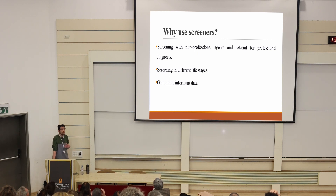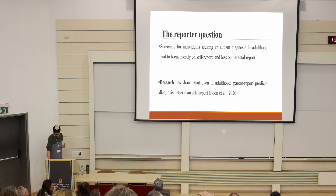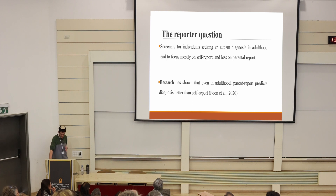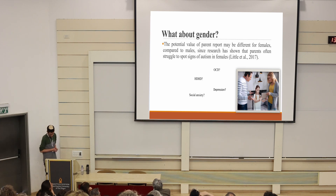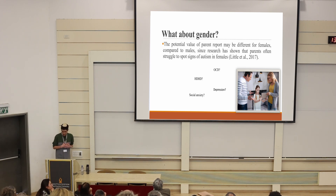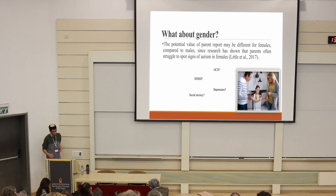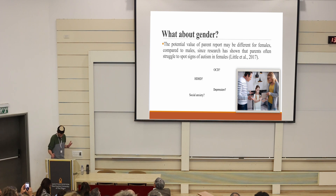Screening can provide a more comprehensive understanding of the individual's experiences and symptoms. Many screeners for autism in adulthood rely heavily on self-reports, which can result in an incomplete picture of the individual's symptoms and experiences. Parental report, even in adulthood, has been shown to be a better predictor of a diagnosis than self-report. While parent report can be valuable in the screening and diagnosis process in adulthood, it is important to note that their potential value may differ for females compared to males. Research has shown that parents often struggle to recognize signs of autism in females, and may therefore be less accurate in their reporting for females.